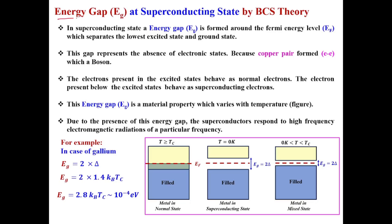Now we are going to discuss the energy gap, represented as Eg, at the superconducting state. This figure represents the metal in normal state — that is, at temperature greater than Tc. Here is the metal in mixed state, meaning temperature between 0 Kelvin and the transition temperature. And this is the metal in the superconducting state. This is the pure superconducting state because it is at 0 Kelvin.